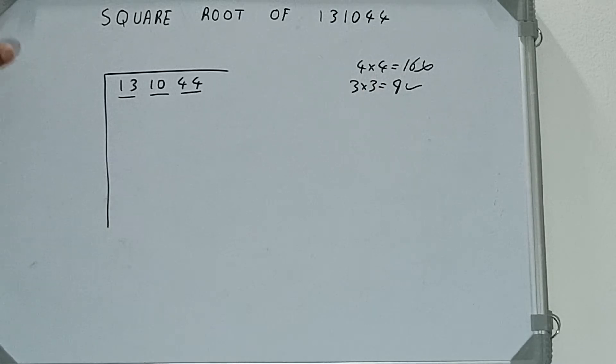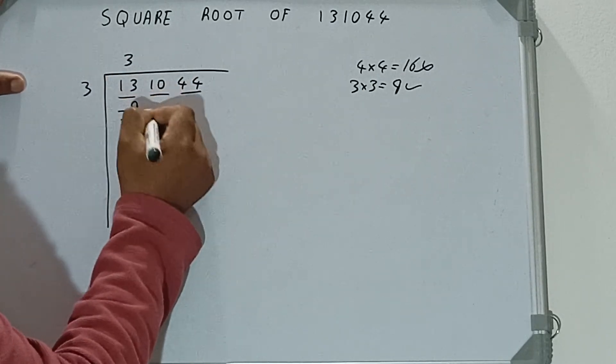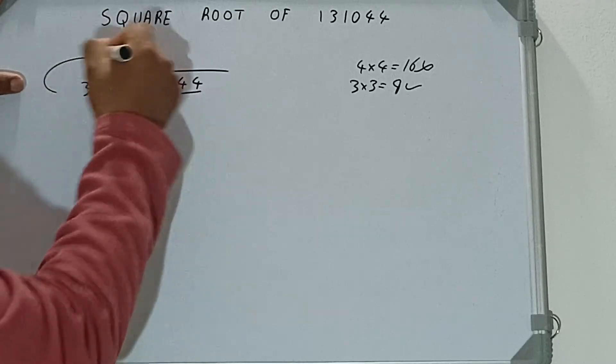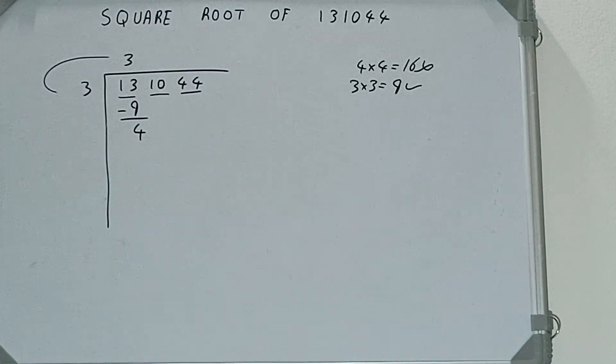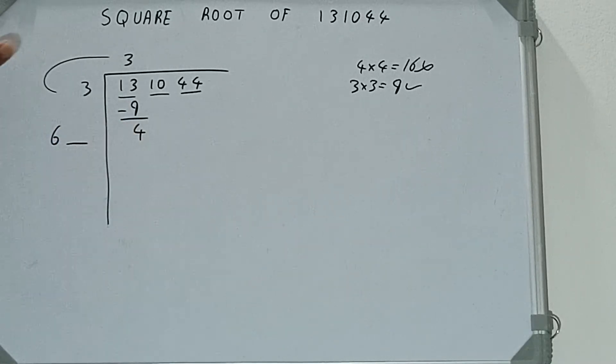So 3 here and 3 here. 9 subtract, 4 will be left. We did 3 into 3, so add both. So 3 plus 3 will be 6. Write it here and keep a digit extra.